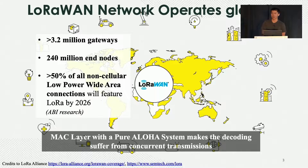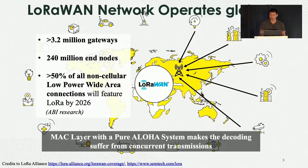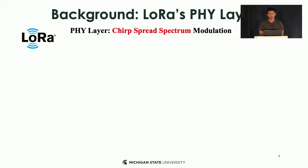However, its simple MAC layer with Aloha systems makes decoding suffer from concurrent transmissions. The end nodes simply transmit whenever they need, and as a result, massive collisions cause decoding failure at the gateway side, leading to throughput degradation.